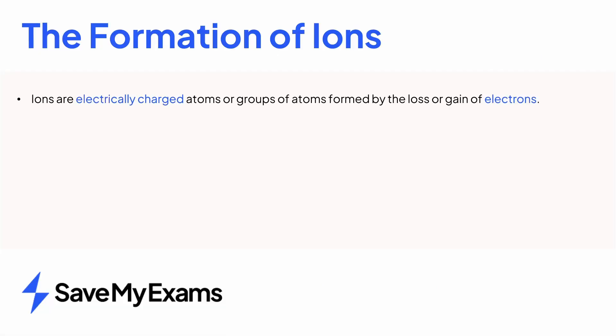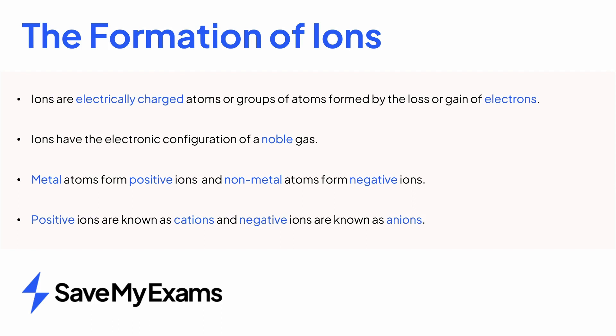In summary, ions are electrically charged atoms or groups of atoms, which are formed by the loss or gain of electrons. Ions lose or gain electrons to gain a full outer shell of electrons, which is a much more stable arrangement. As they have a complete outer shell of electrons, their electronic configuration will be the same as of a noble gas. Metal atoms lose electrons to form positive ions, and non-metal atoms gain electrons to form negative ions. The terms cation and anion are used to describe positive ions and negative ions.